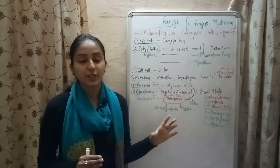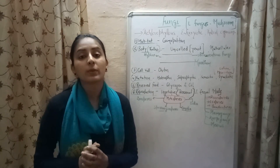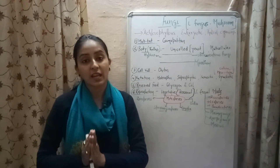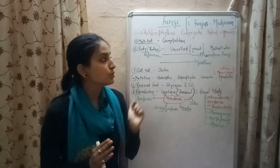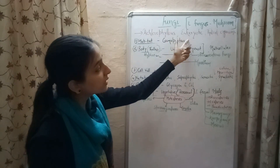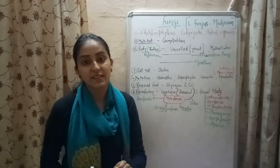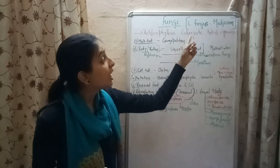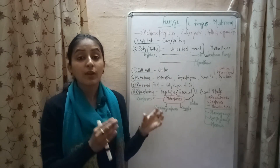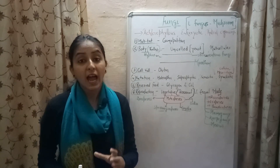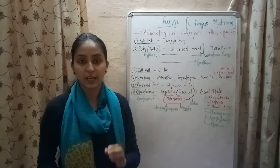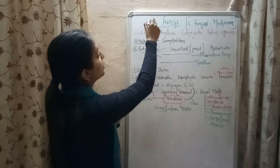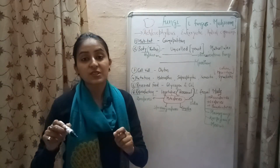Kingdom Fungi is derived from a Latin word, 'fungus', which means mushroom. Kingdom Fungi includes achlorophyllous, eukaryotic, and thaloid organisms. Achlorophyllous means the organisms in which chlorophyll is absent. Eukaryotic means the organisms in which well-developed nucleus are present. Thaloid organisms are the organisms in which the body is not divided into root, stem, or branches.